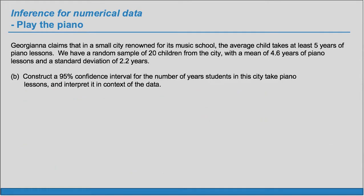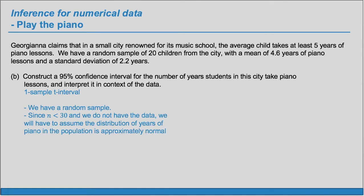Part B: construct a 95% confidence interval for the number of years students in this city take piano lessons, and interpret it in context. We again have one sample dealing with a mean, so we use a one sample t-interval. The conditions are the same as for the test: we have a random sample, and again we'll have to assume the distribution of the population is approximately normal, because our sample size is too small and we don't have the data to investigate it.